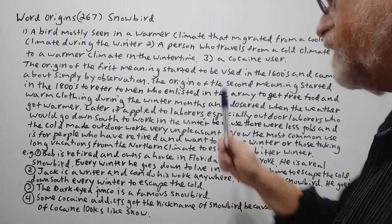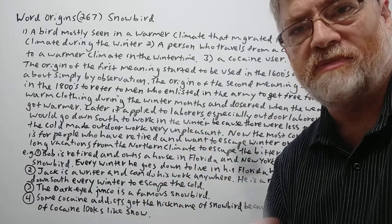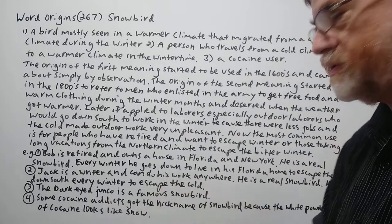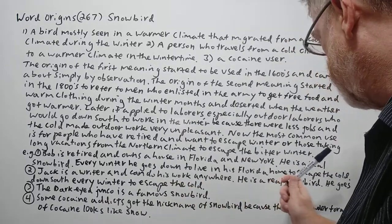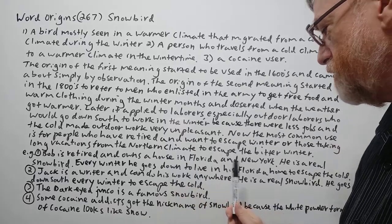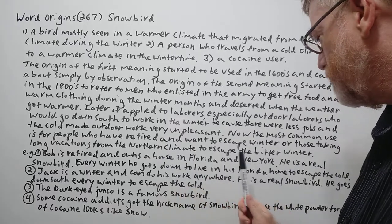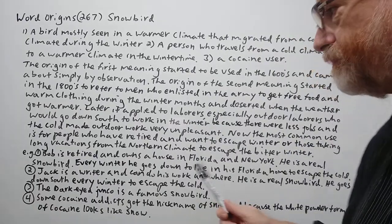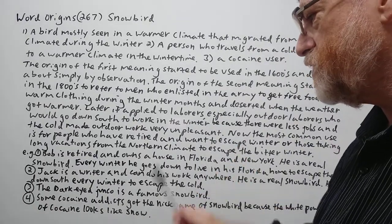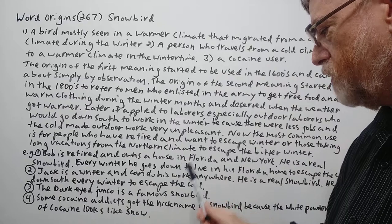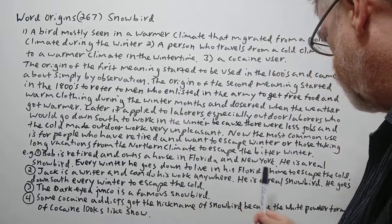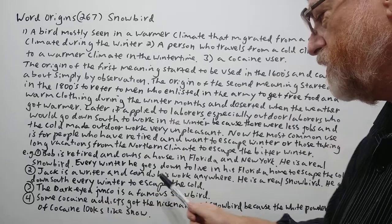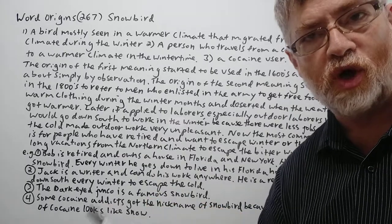We have four examples to show how it's used. Number one: Bob is retired and owns a house in Florida and New York — he is a real snowbird. Every winter he goes down to escape the cold. Number two: Jack is a writer and can do his work anywhere. He is a real snowbird — he goes down south every winter to escape the cold.